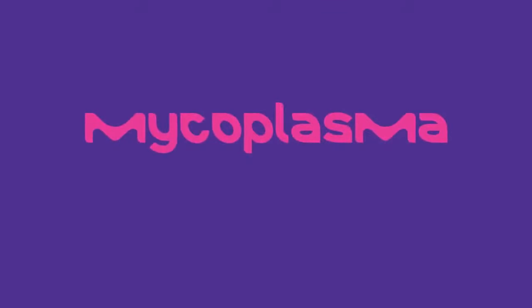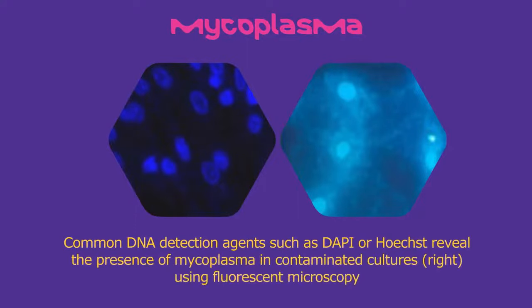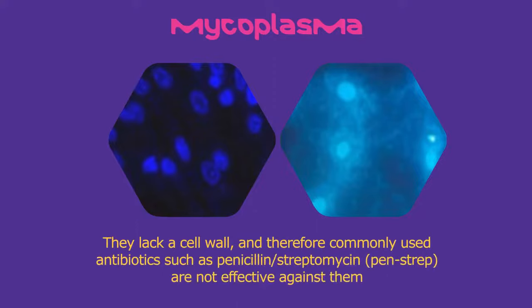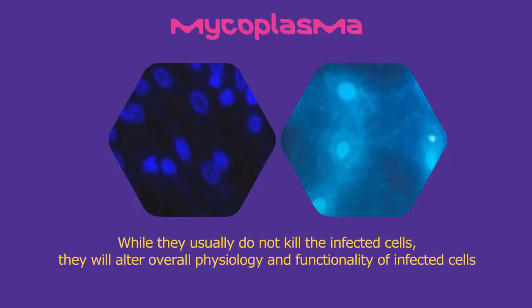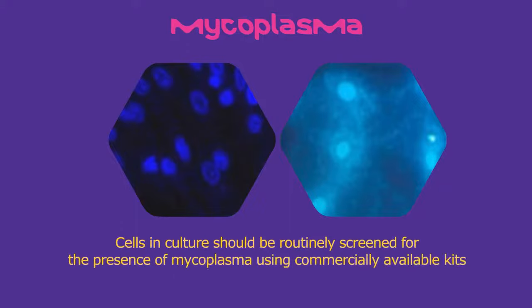One particular contamination I would like to call out is mycoplasma, which is often called the silent cell killer. Mycoplasma is a sub-micron sized bacterium and therefore cannot be visualized under routine microscopic monitoring. Due to their small size, they can easily attain a concentration of about 100 million bacteria per milliliter without causing turbidity of the medium. They lack a cell wall, and therefore commonly used antibiotics such as pen-strep are not effective against them. While they usually do not kill infected cells, they will alter the overall physiology and functionality of infected cells. If you notice your cells are not behaving in the expected manner, such as slower growth or change in morphology, it would be a good idea to test for the presence of mycoplasma through commercially available kits.